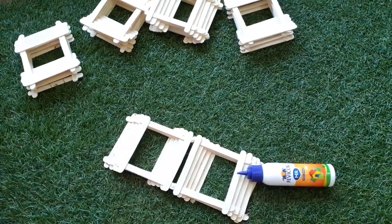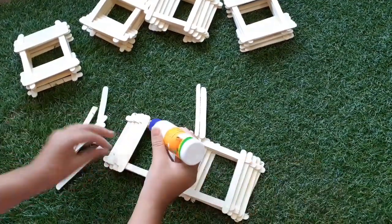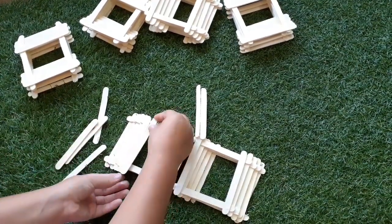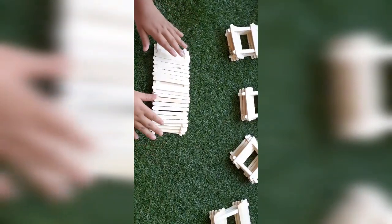Now we will take the rest of the ice cream sticks and put them on these to block this way. Now allow it to dry till the time we attach three of these together.